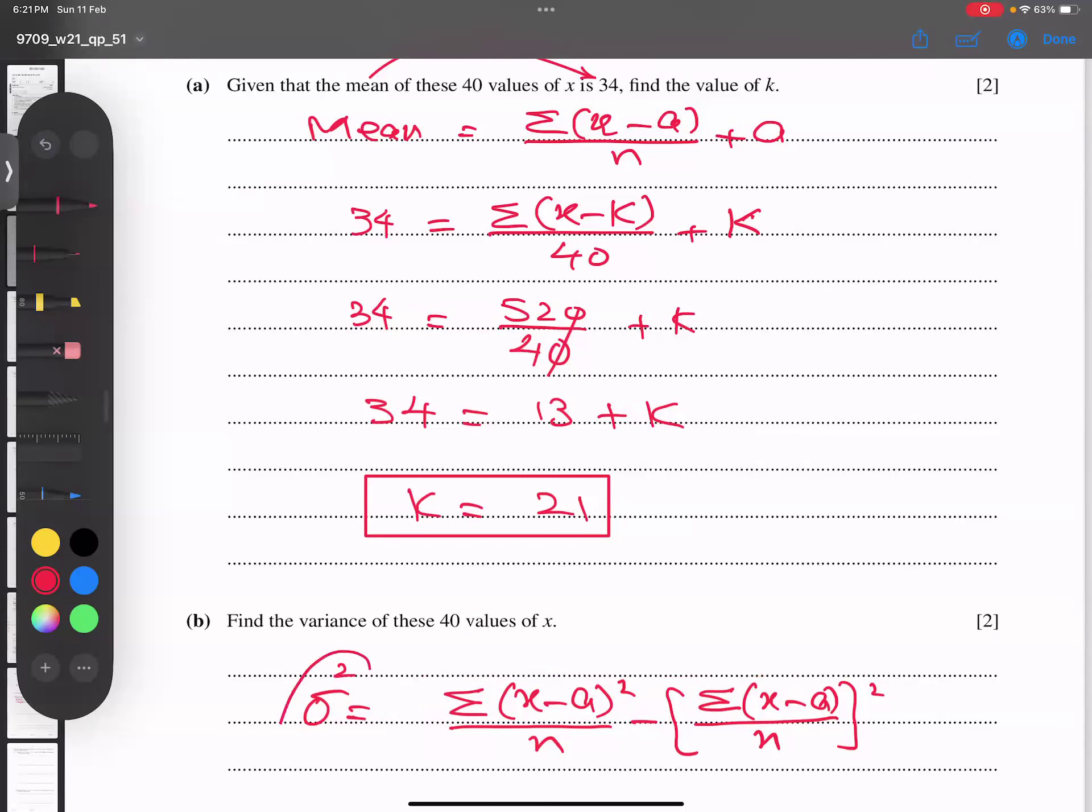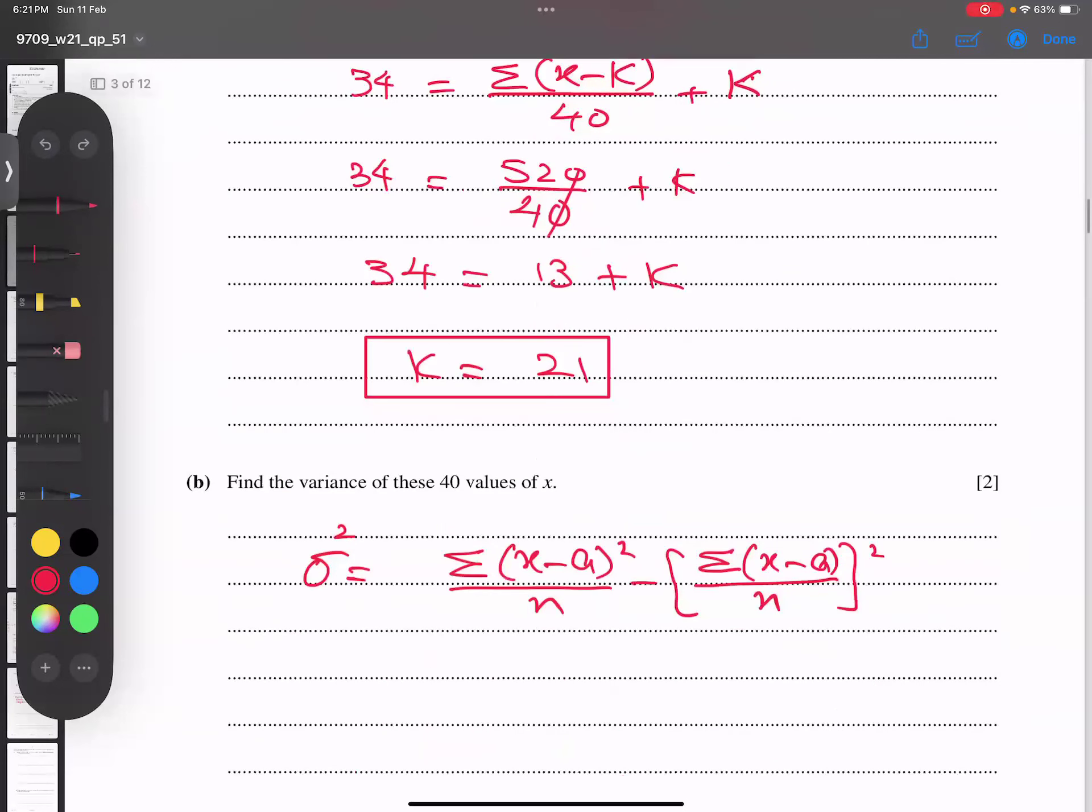I'm going to put square on both sides, so the root will eliminate automatically. This is the formula for variance. Now I change it slightly: sigma squared equals sigma x minus k whole square by n minus sigma x minus k by n whole squared.